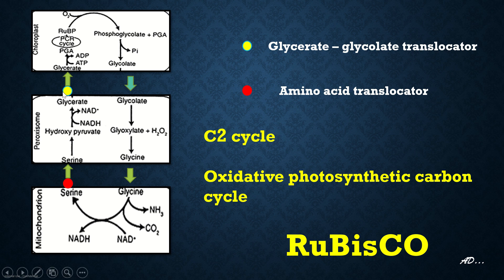This hydroxypyruvate will in turn get converted to glycerate by hydroxypyruvate reductase, with the formation of NAD from NADH. This glycerate will also travel to the chloroplast via the glycerate glycolate translocator. Once glycerate reaches the chloroplast, it is converted to PGA, or phosphoglycerate, by glycerate kinase at the cost of ATP.